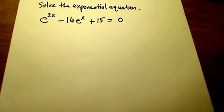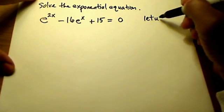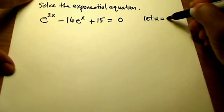What the book suggests we do first is we choose a variable like u, and we'll let u equal e to the x.